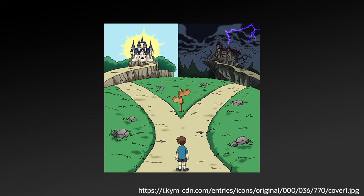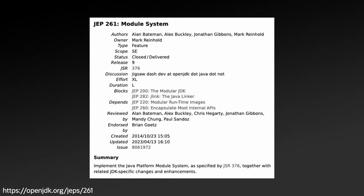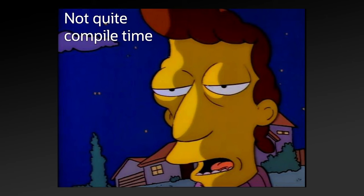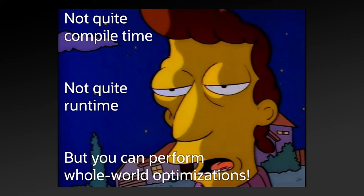The path to creating a customized runtime containing only the code your application needed is now clear, but we are not quite there yet. Returning to JEP 261, which defined the module system, also included in this JEP was the addition of a new optional phase in the creation of a Java application: link time. Link time is kind of like brunch — it's optional and exists between two more commonly known periods. It's not quite compile time, not quite run time, but a phase where you can perform whole world optimizations.